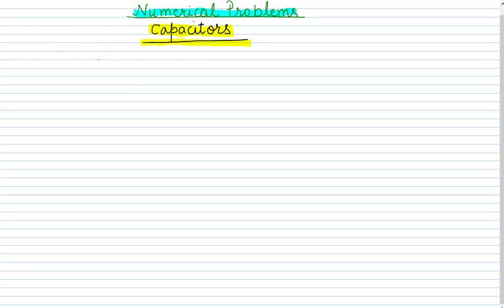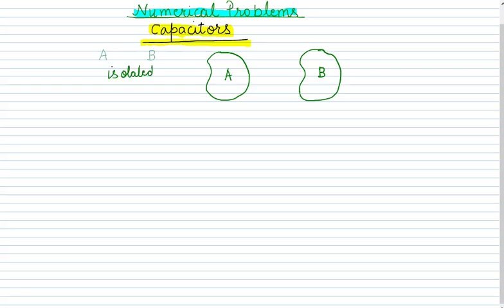In the first numerical, we are given two isolated conductors A and B. These two are isolated, meaning they are kept at a distance from each other and are not interacting. Now they are joined by a conducting wire.